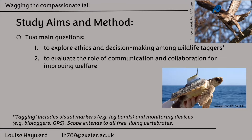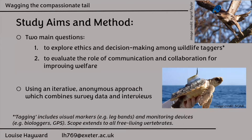My second focus is looking at communication and collaboration — communication within a research group and collaboration between research groups, and how that might enable improved welfare. So it could be sharing experiences, sharing designs for tag attachments, or sharing data so that that reduces the number of additional animals that have to be tagged. I'm doing this in an iterative way by combining survey data and interviews, then putting that information back to the original group so they look at anonymous group data and reflect on their views in relation to the group.